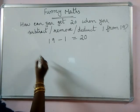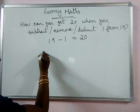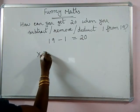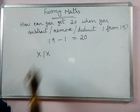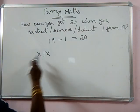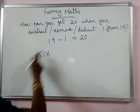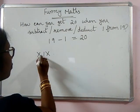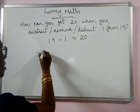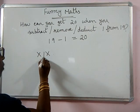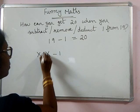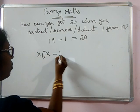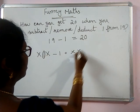Let me tell you. The Roman numeral for 19 is this — XIX. From this, you remove this 1. This 1 you remove, and you will get 10 and 10.